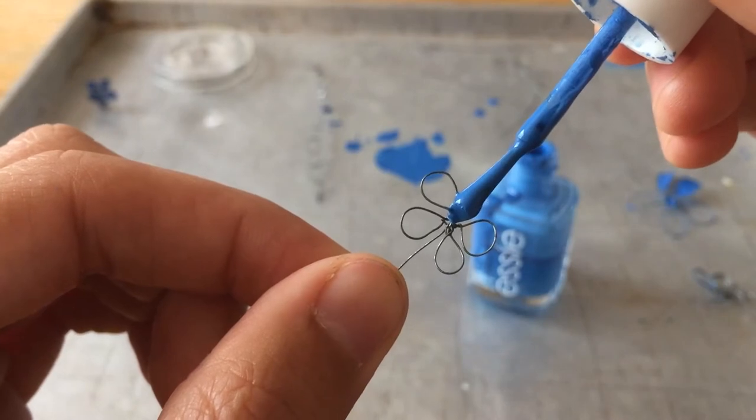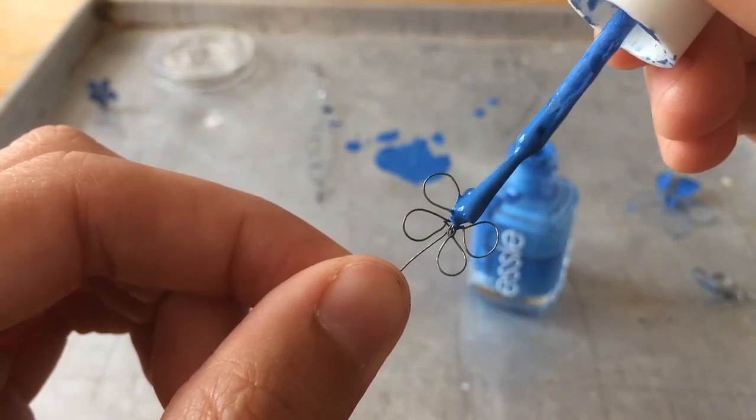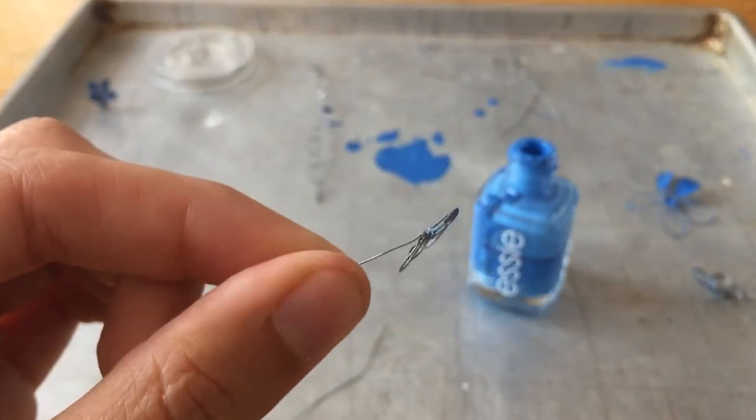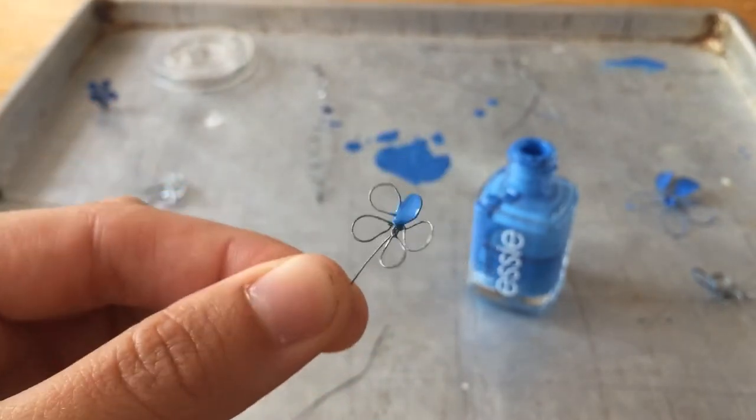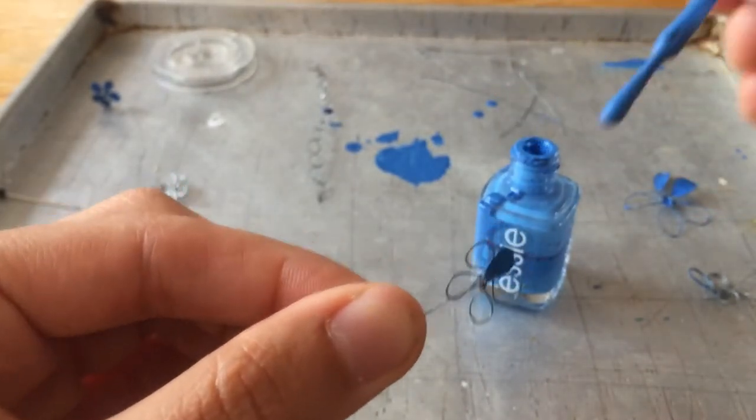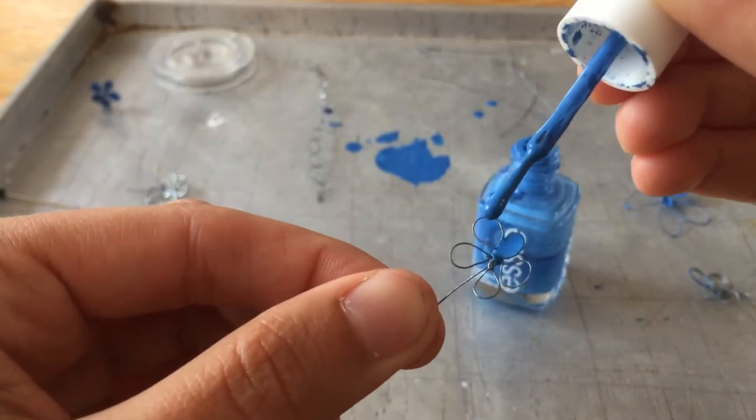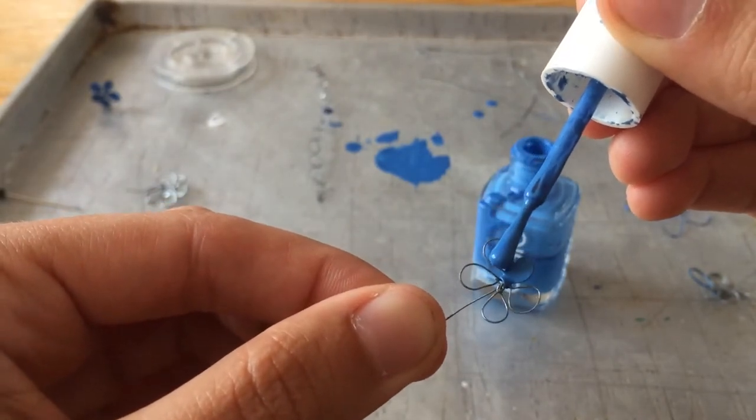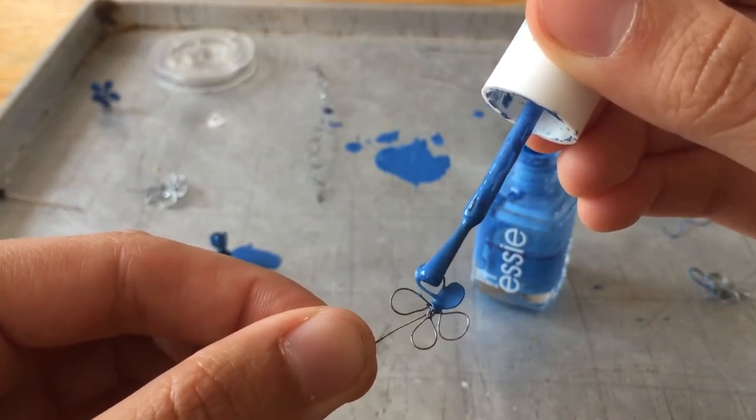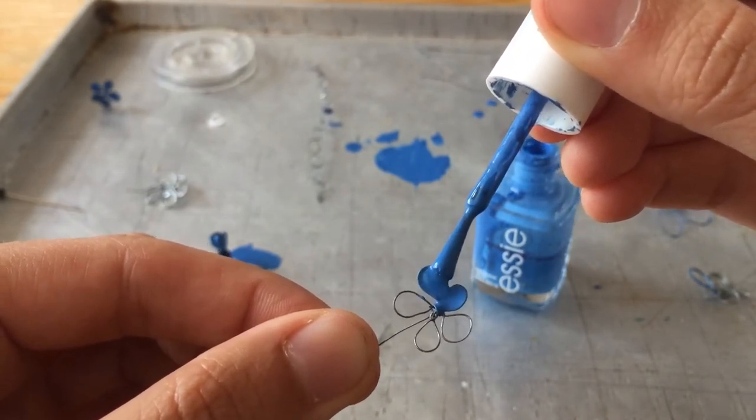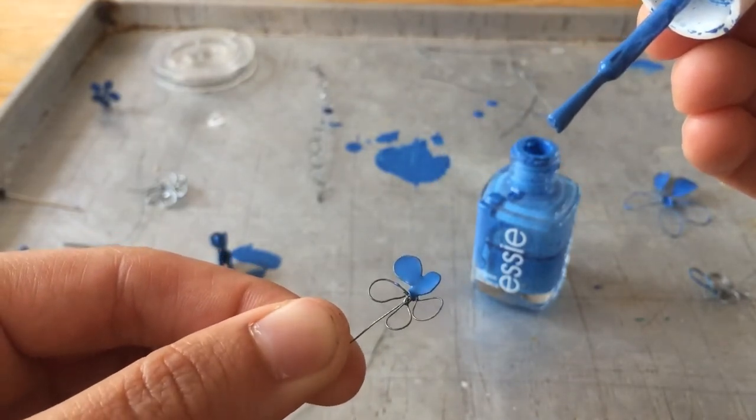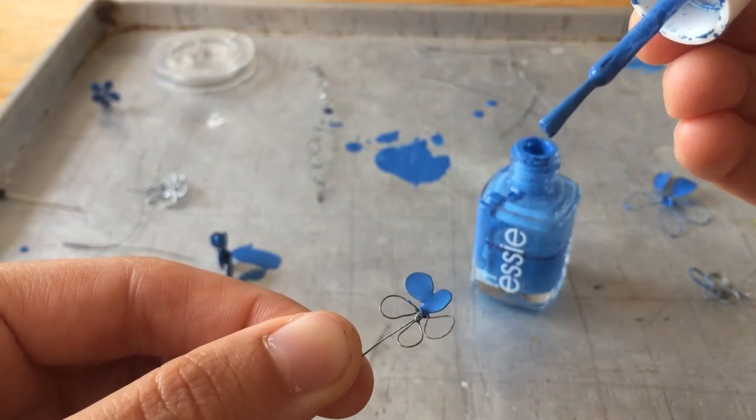I'm going to put a little bit of polish on there and it should sit flat like that. So a fair bit of polish on there and then sit it on the loop. Yeah, see if I swirl it around, the polish kind of meets all the edges of the loop. Like that.